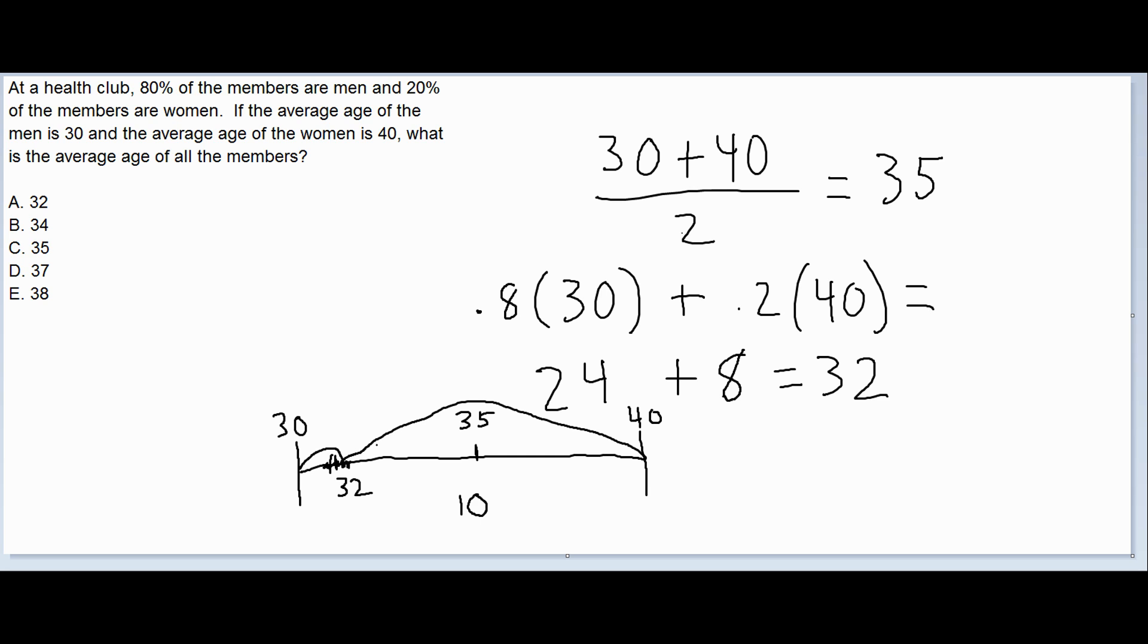Okay? So when you get a problem like this, you can think of it that way. Just think about what would it be with just one part of the subgroup, and then how far is the addition of the other subgroup going to pull it in that direction? And make sure the answer makes sense afterwards. Make sure that, like in this case, 32 makes sense because it's closer to the men's average, which it should be because there's more men than women.